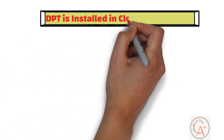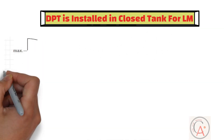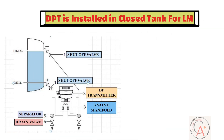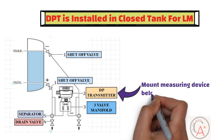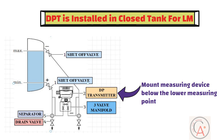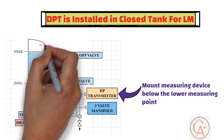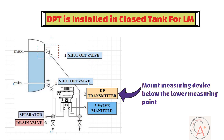Let's take the second scenario, when a DP transmitter is installed to measure level in a closed tank. As you can see, mount the measuring device below the lower measuring connection so that the impulse lines are always filled with liquid. The low pressure side needs to be connected above the maximum level. Additionally, the separator and drain valves are useful for capturing and removing sediment when liquid level measurement is done in media with solid parts such as dirty liquids.